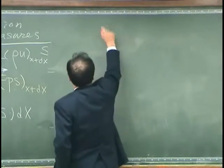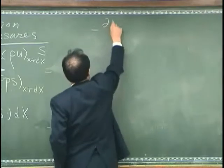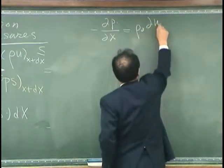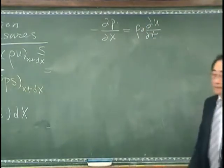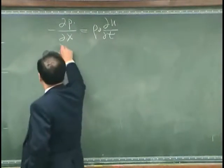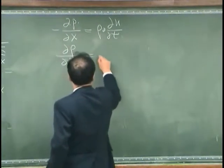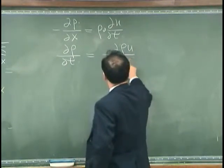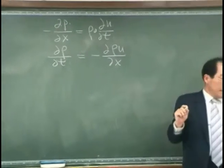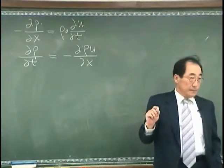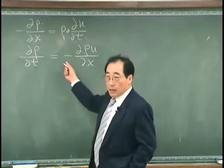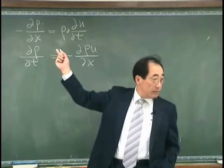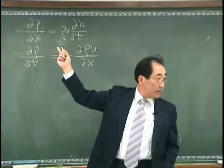Now let me rewrite the linearized Euler equation and the conservation of mass. Is it right to put minus here? Wrong or right? Right.